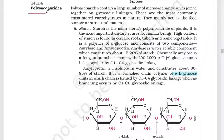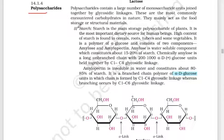Polysaccharides — what are these? These are carbohydrates made of a large number of monosaccharides. We have three polysaccharides: one is starch, second is cellulose, and third is glycogen.